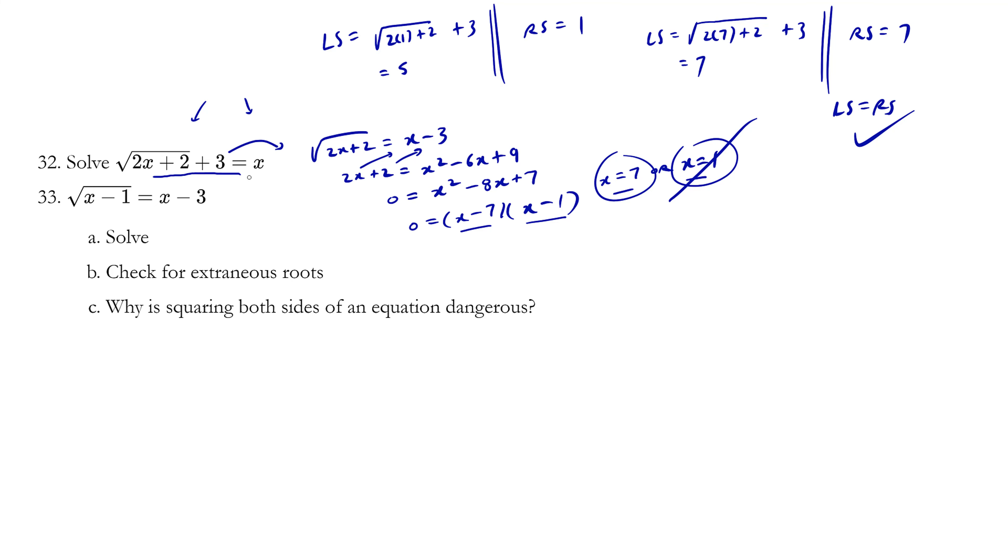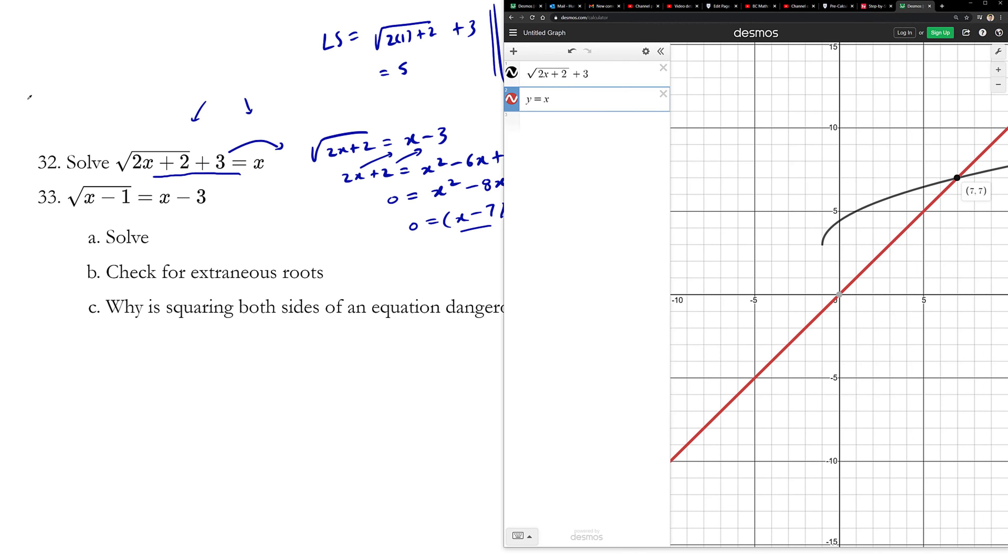Let's take a look at this expression on Desmos. So here we punched in the equation y equals √(2x + 2) + 3. And the second function we wrote y equals x. And the two graphs intersect at x equals 7. That's the solution. And if you want to find out the y value, you simply plug in that x value into either equation. I recommend the second one since it's so easy. 7 comma 7 is the point of intersection.